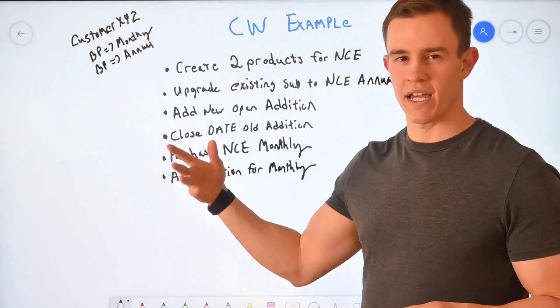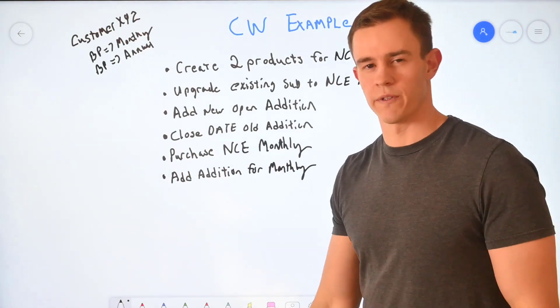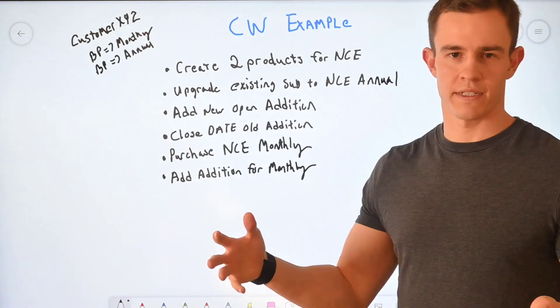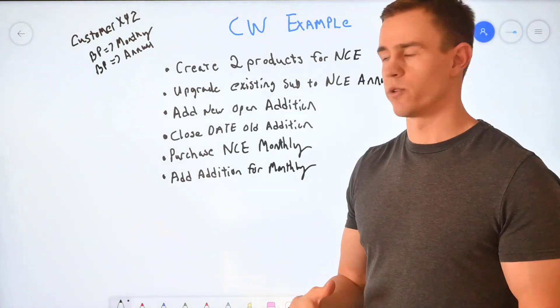So essentially there, you would just be adding prorations throughout the middle of the term if you have any and then all those top level quantities would co-terminate on their renewal dates.